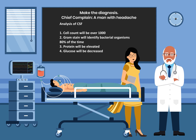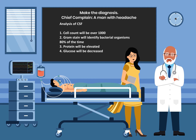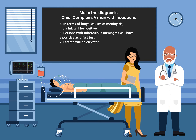When cerebrospinal fluid is analyzed, in bacterial meningitis the cell count will be over one thousand. The Gram stain will identify bacterial organisms 80% of the time. Protein will be elevated and glucose will be decreased. For fungal meningitis, India ink will be positive. In tuberculosis meningitis, the acid-fast test will be positive, and lactate will be elevated.